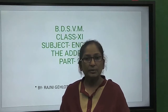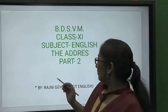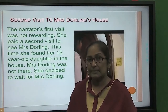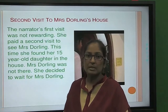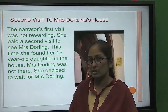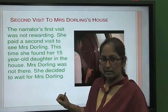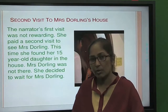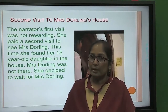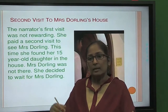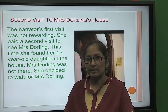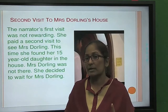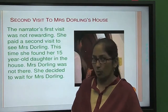In the last video, in the first part of the video, we came to know about the address — what was the address, by whom and to whom it was given, and when it was given to the narrator. There was a description of the first visit of Mrs. Sashwati's daughter and how she was treated by Mrs. Darling at that address, and she went into flashback of the pre-war period when she returned to her home.